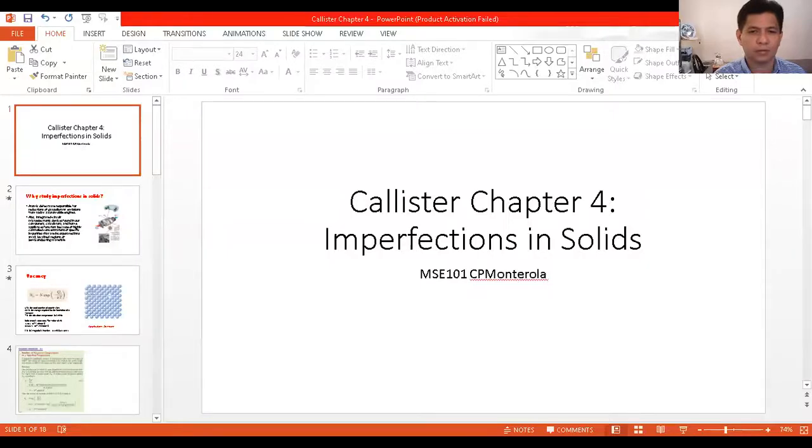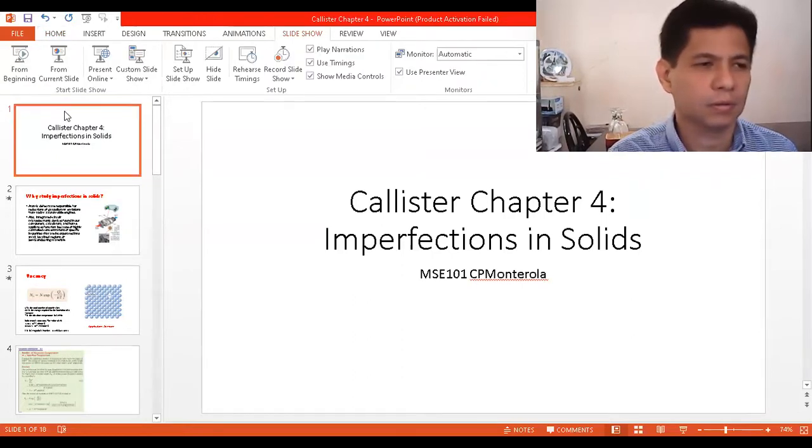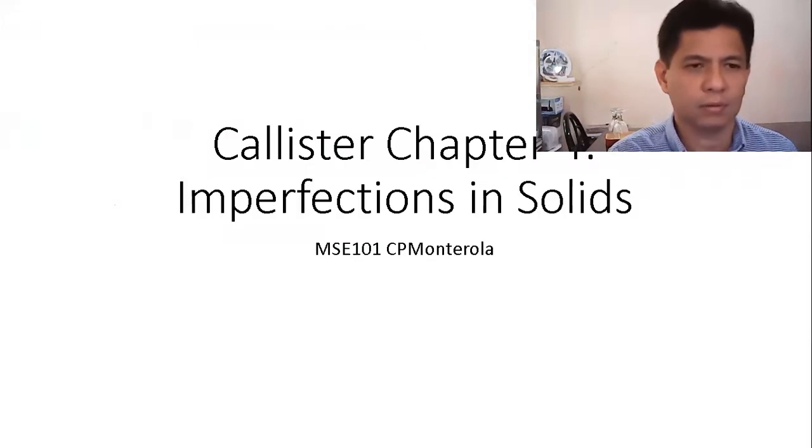Good morning. In this video, we're going to discuss the different solid defects and their applications in the industry. You can find this material in Chapter 4 of Callister. This is imperfection in solids.